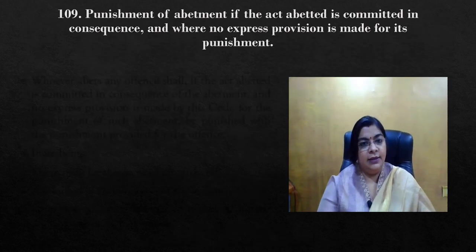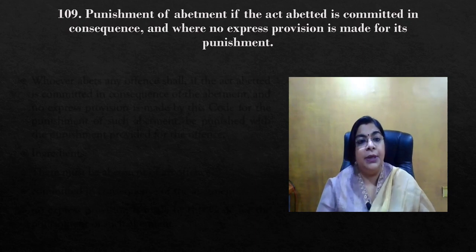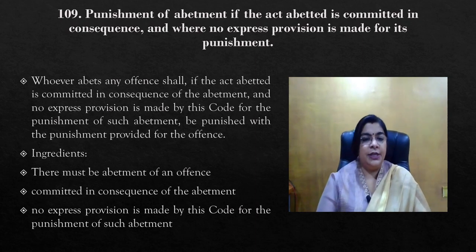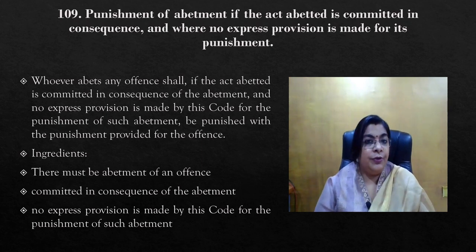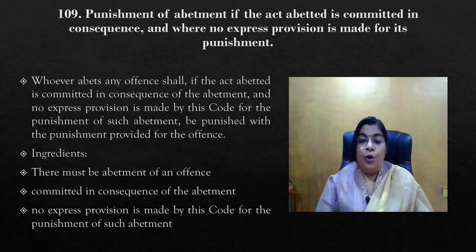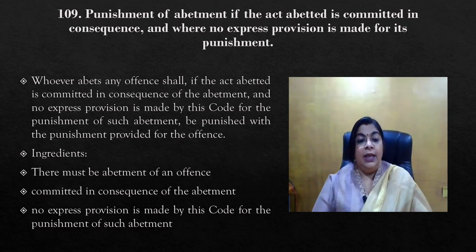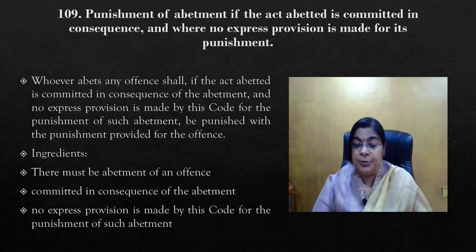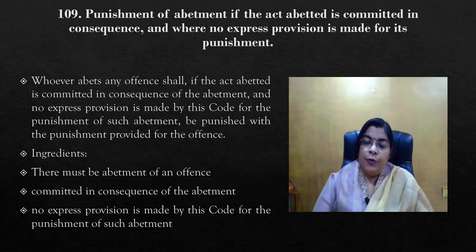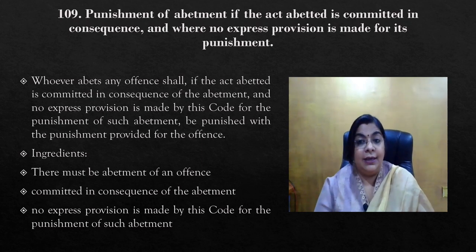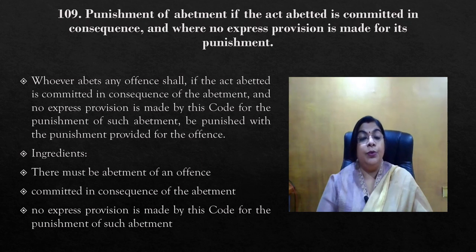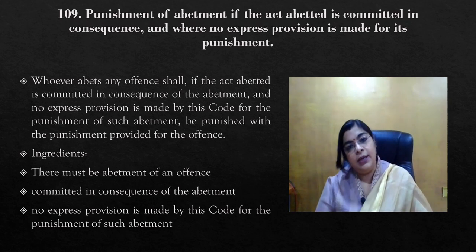Section 109 states that punishment of abetment if the act abetted is committed in consequence and where no express provision is made for its punishment. This section expresses basically three ingredients. First, there must be abetment to constitute any sort of illegal act or an offense. Secondly, whatever offense is being committed should be a consequence of the abetment. Thirdly, if there is no expressed provision made for the punishment of such offense under abetment, then whatever punishment is prescribed for the act, that will be the same punishment for the person who is abetting, similar to the person who is committing the act.